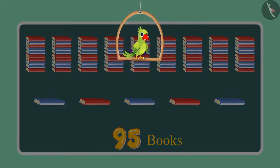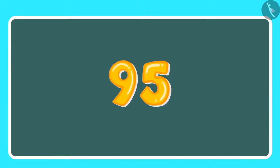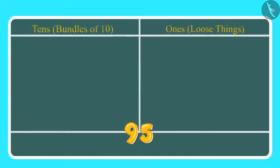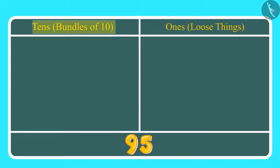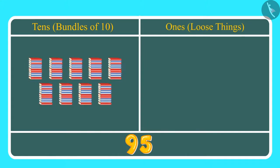Can you tell me how many ones and how many tens are there in 95? Children, this is how we write 95. Here 9 is at the tens place and 5 is at the ones place. This means we have 9 tens, which we can also call 9 bundles of 10, which is 90. And along with that, 5 ones, which means 5 books.